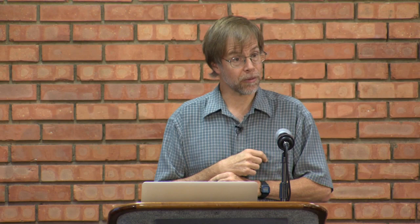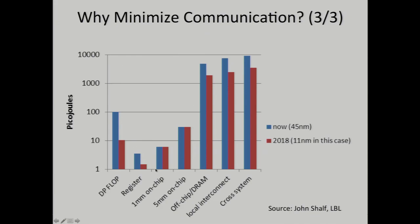We want to avoid communication to save time. But that's not the only reason—here's a plot of the energy it takes to perform basic operations on a machine. The vertical axis is a log scale in picojoules. A single double-precision floating point operation, the next three bars are energy for moving it on chip (register, one millimeter, five millimeter), and the last three bars are moving it off chip, which is really expensive. The blue bar is today's 45-nanometer technology. It's one and a half orders of magnitude more energy per word moved off chip than to do a double-precision floating point operation. In five years, predictions say it will be two and a half orders of magnitude. So whether you're worried about your laptop battery or the million dollars per megawatt per year to run your supercomputer center, you want to minimize communication to save energy.